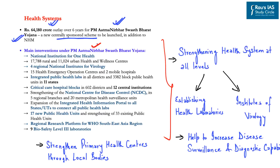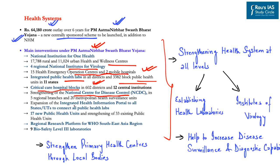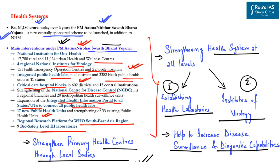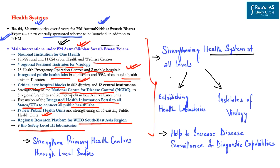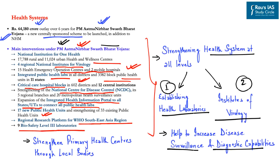The main interventions under PM Aatma Nirbhar Swastha Bharat Yojana include: National Institution for One Health with rural and urban health and wellness centers; four regional national institutes of virology; 15 health emergency operation centers and two mobile hospitals; integrated public health labs in all districts; critical care hospital blocks in 602 districts and 12 central institutions; expansion of the integrated health information portal to all states; 17 new public health units; a regional research platform for WHO Southeast Asia region; and nine biosafety level three laboratories. These will strengthen disease surveillance and diagnostic capabilities and support primary health centers through local bodies.